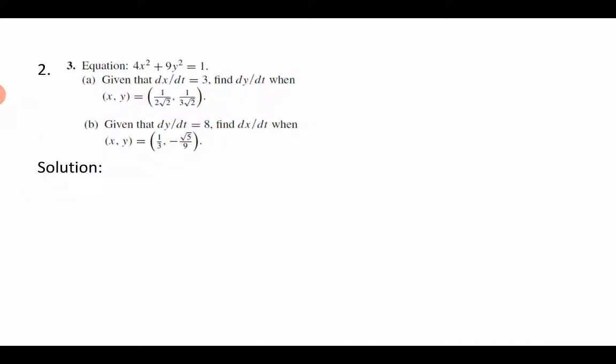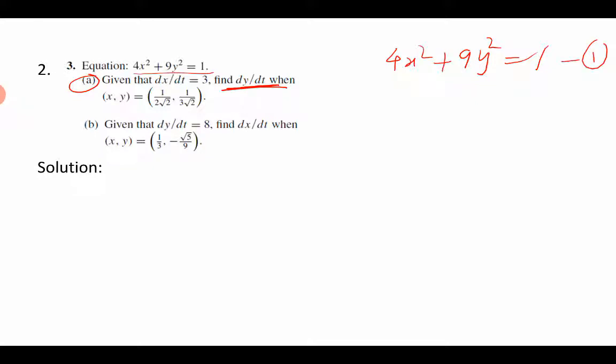Let's go to the next problem. Here it's a function that involves both variables, so we will use implicit differentiation directly. I will solve one part; the second part is your practice. The given equation is 4x² + 9y² = 36. Differentiate this equation with respect to t on both sides.